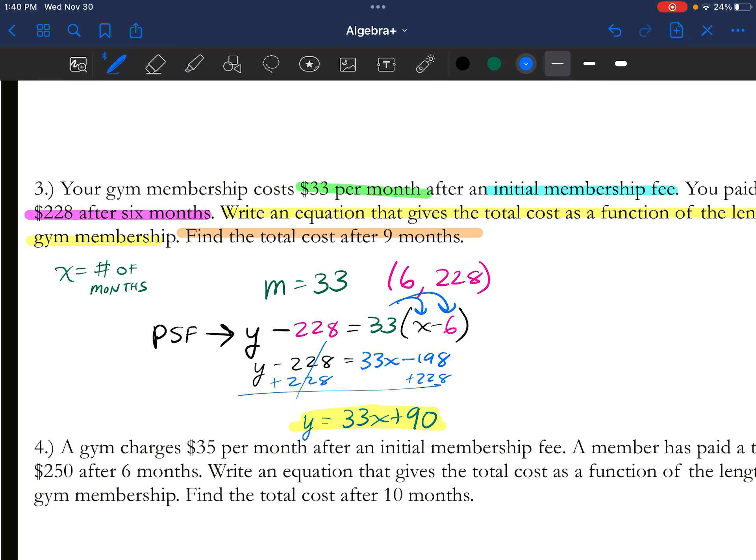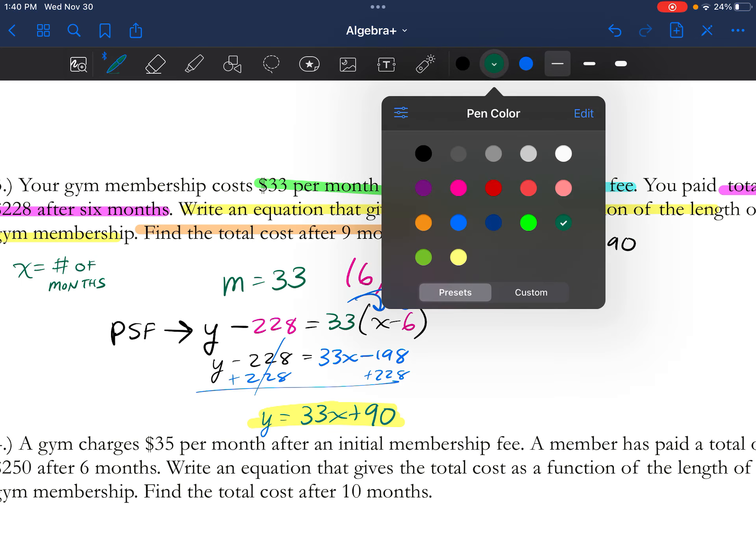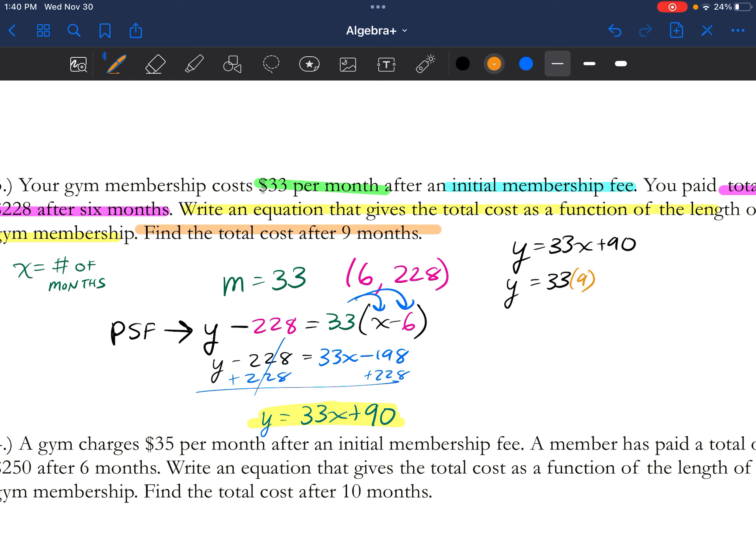We still have yet to take an extra step because it's not just stopping us there. Now it says find the total cost after nine months. So we're going to take our equation. We get y equals 33x plus 90, and we know x is a number of months and it gave us the number of months is going to be nine. So we're going to substitute that in and add 90. When you solve this, you're going to get y equals 387. So it's $387 to use it for nine months.